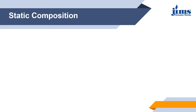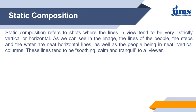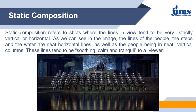Next is Static Composition. Static composition refers to shots where the lines in the view tend to be strictly vertical or horizontal. As we can see in the image, the lines of the people, the steps, and the water are neat horizontal lines, with the people standing in neat vertical columns. These lines tend to be soothing, calm, and tranquil to the viewer. This is the example of static composition — all the people are horizontally and vertically in line, which gives a pleasant video.